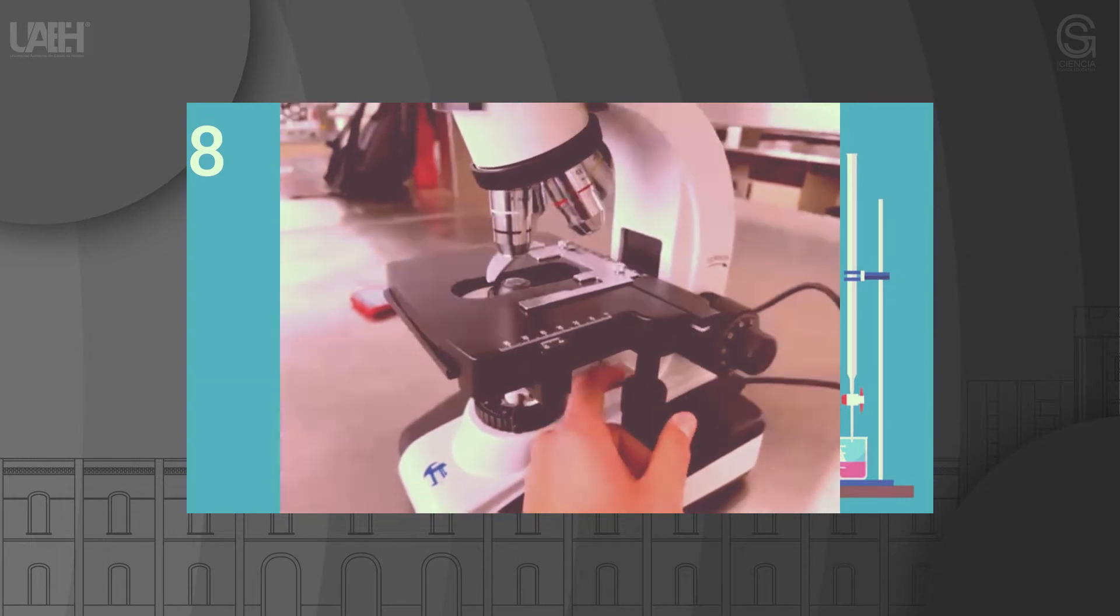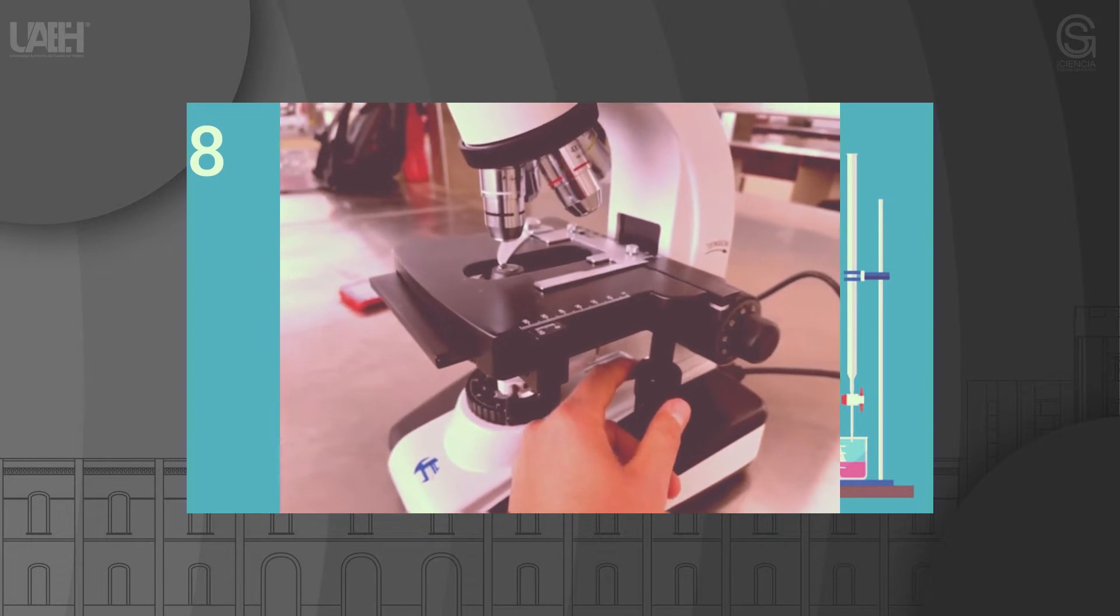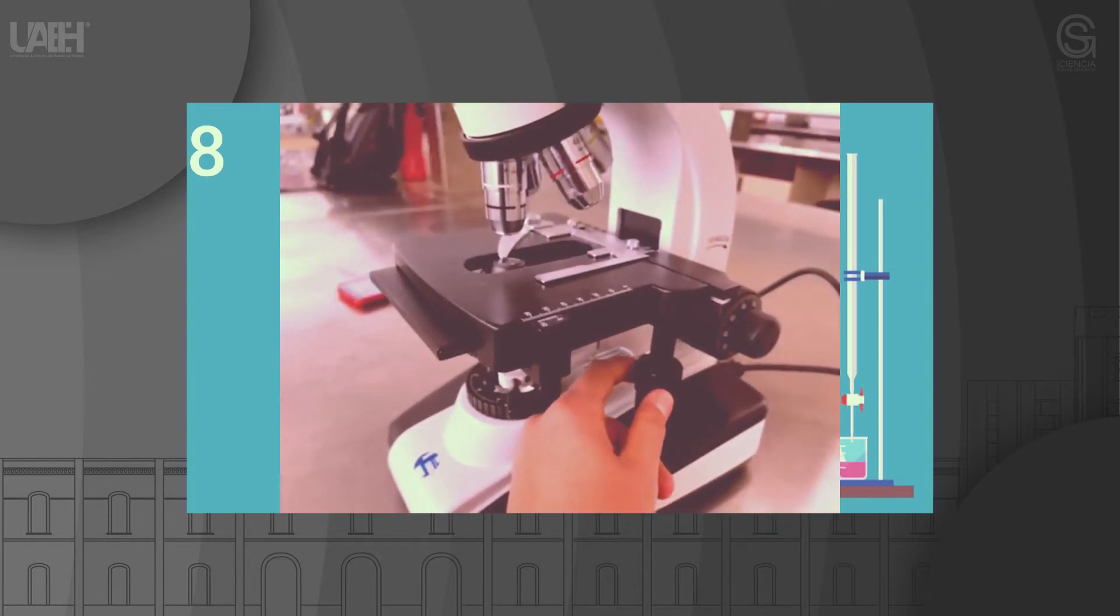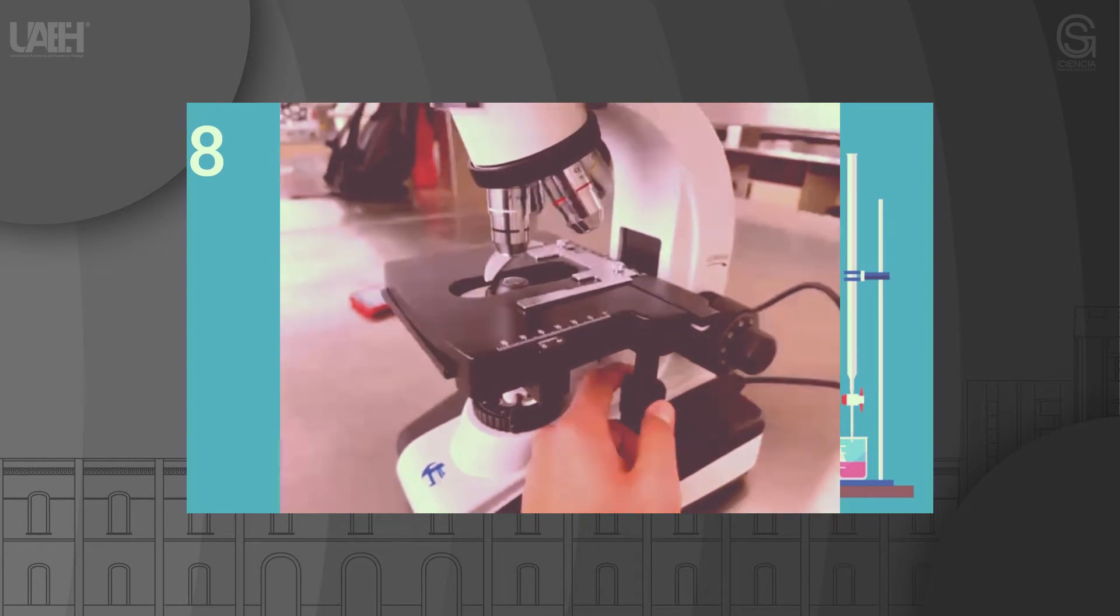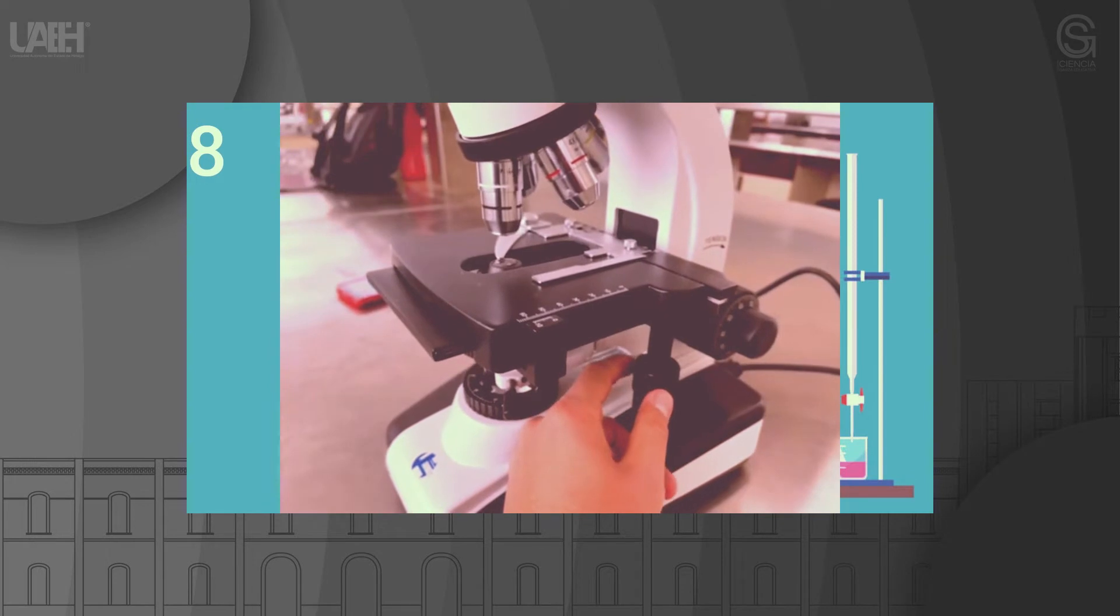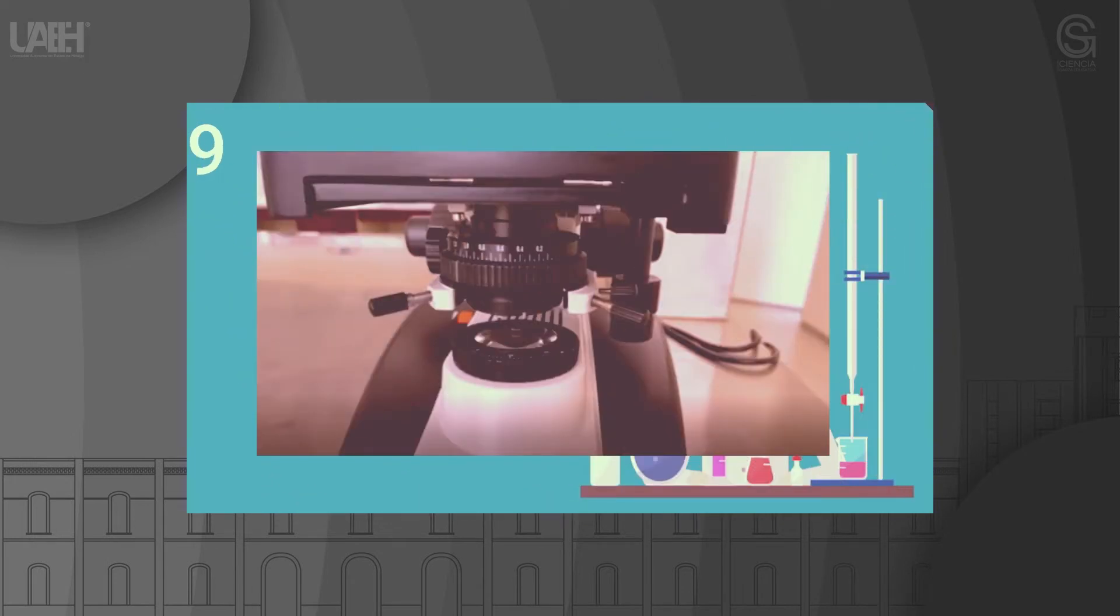Step 8: Once you can see a focused image of the sample through the eyepiece, carefully move the slide so that the details of the sample you are interested in come into your field of view. If your microscope is equipped with a moving carriage, you can use the moving carriage screws to adjust the position of the slide.